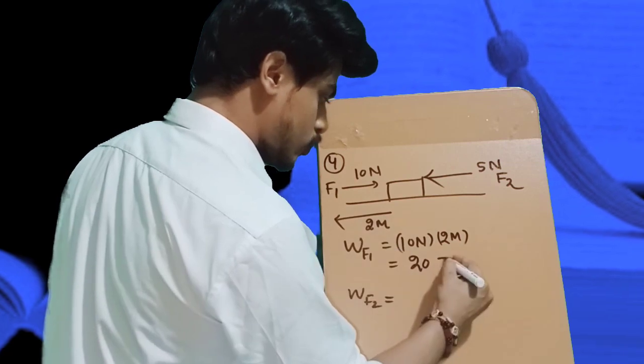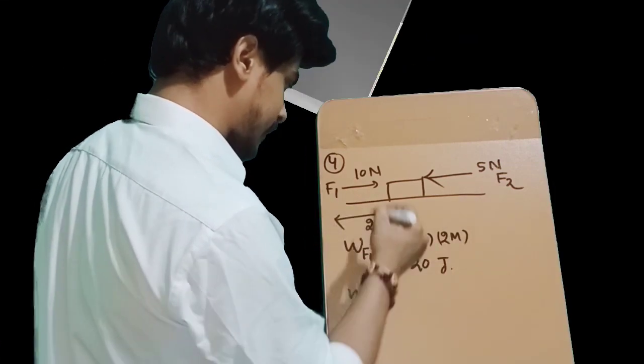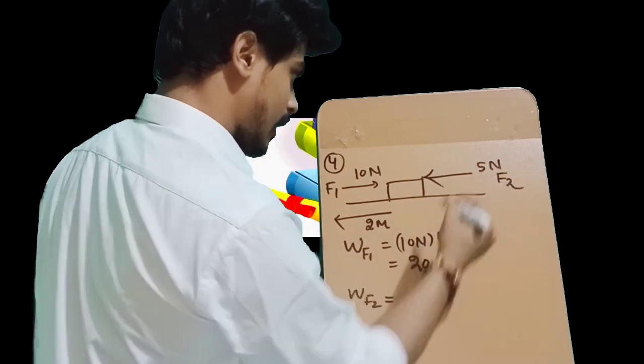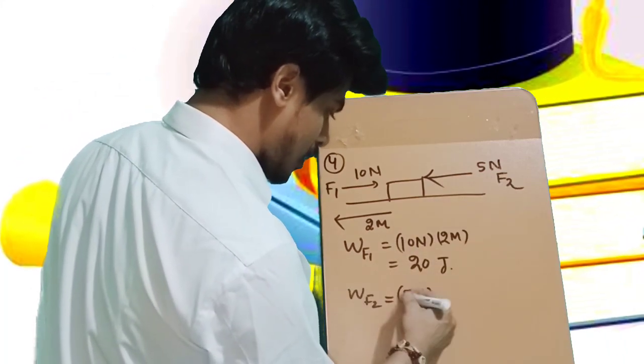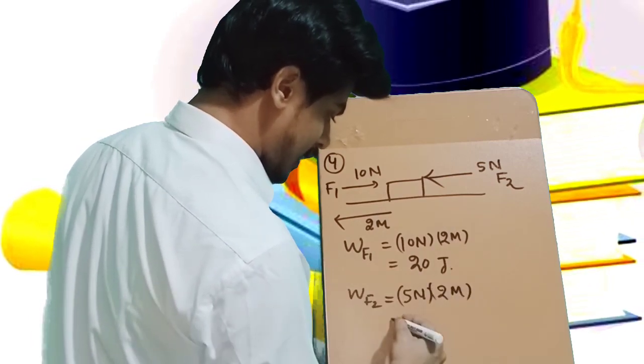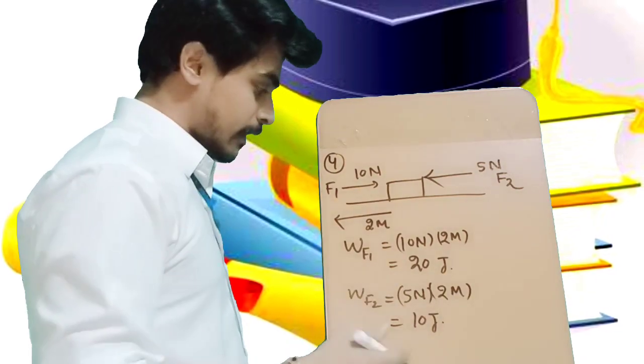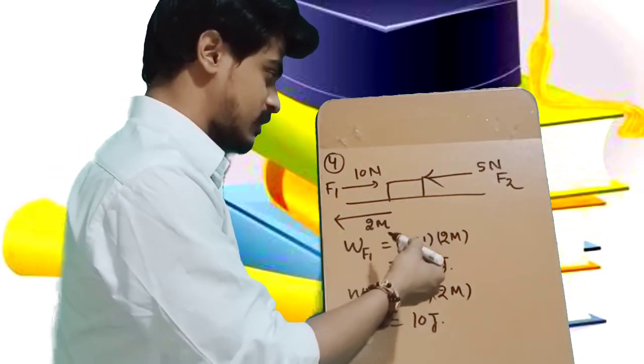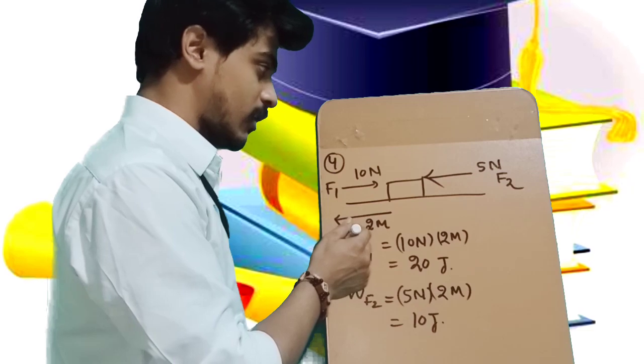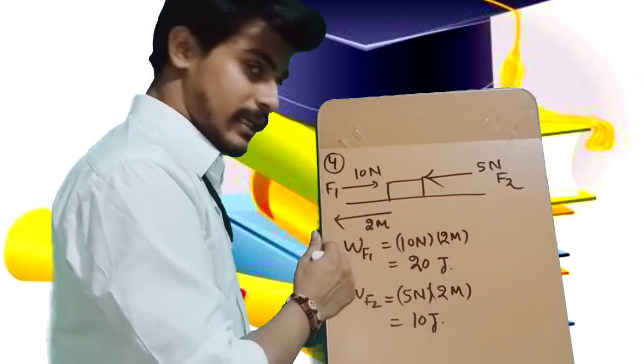In the second case, 5 Newton into 2 meters equals 10 Joules. But we have to see the displacement direction. If F1 is in the same direction as displacement, but F2 is in the opposite direction, the signs will differ.